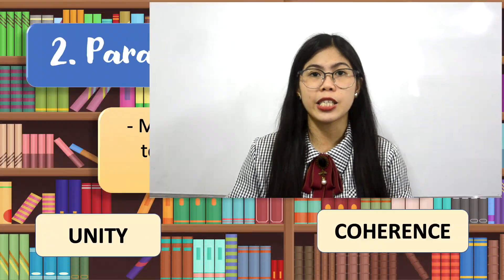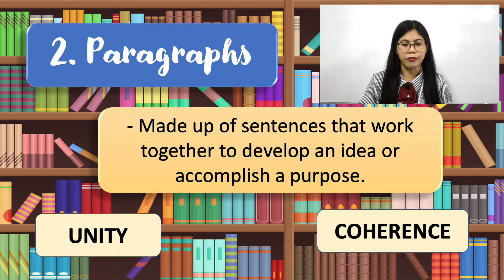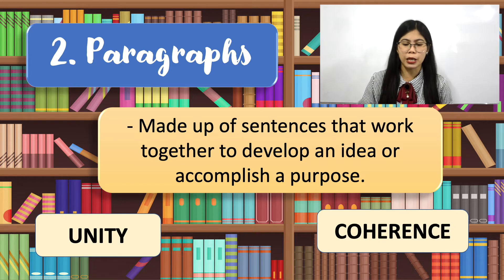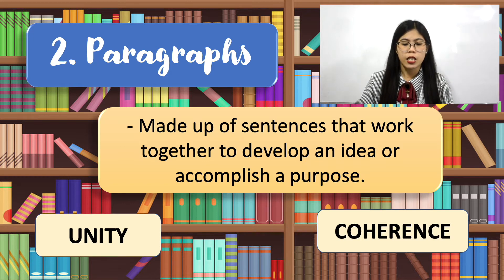Another component is the paragraph. You must be able to have an effective paragraph. A paragraph is made up of sentences that work together to develop an idea or accomplish a purpose. A paragraph must have unity and coherence. Unity is when all sentences support an explicit or implicit main idea — in other words, when the provided sentences exhibit the same thought about or are related to the main idea. Coherence is exhibited when each sentence follows logically to the next, and all ideas are organized and flow smoothly. Transitional devices will help you achieve coherence.